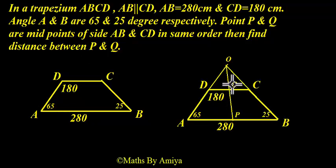So this is our construction. I extended AD till O, BC till O. Since this is 65 and 25, we are getting a right angle triangle at O. P and Q are the midpoints. ODC is a right angle triangle and OAB is also a right angle triangle. And OQ and OP form a straight line because this ratio is 1 is to 1 and this ratio is 1 is to 1.